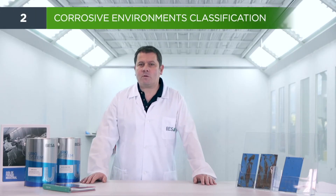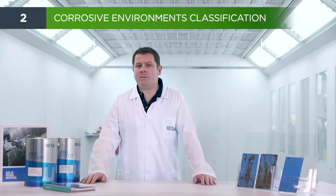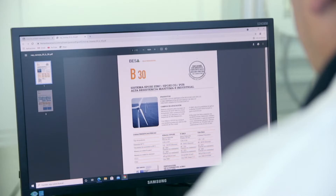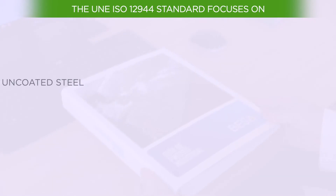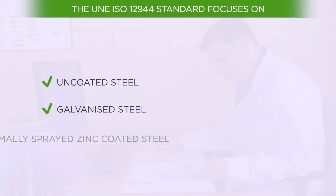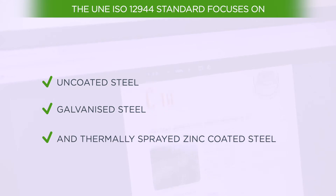The UNE 12944 standard is used to determine corrosive environments and resistance of paint systems. This standard focuses on uncoated steel, galvanised steel, and thermally sprayed zinc coated steel supports.